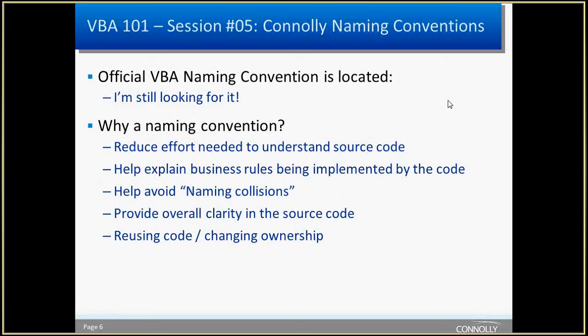Why should we bother having a naming convention? The main thing, at least in my book, is to reduce the effort needed to understand the source code. If I coded something when I first came here and haven't touched it since, and I have to go back in tomorrow — what the heck did I do? If you're looping over an array and you just use 'i', it's not hard to determine what's going on in a simple loop. But as soon as you start nesting things, it can get confusing.